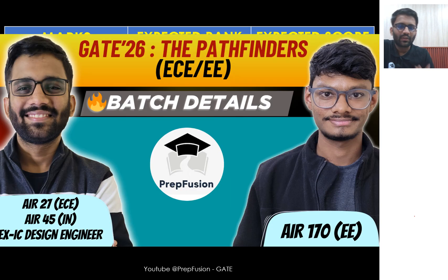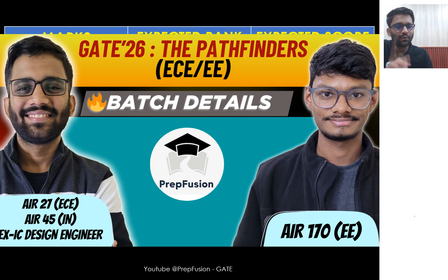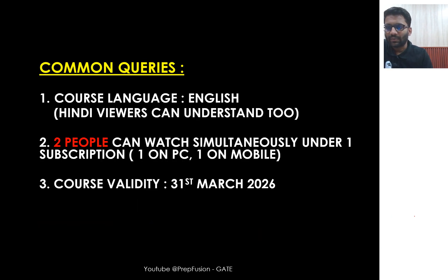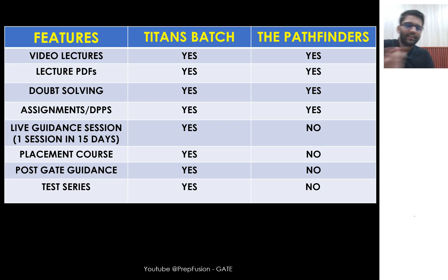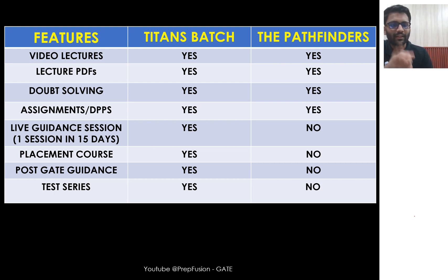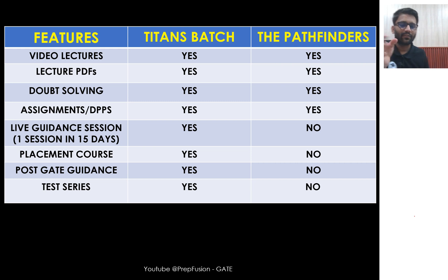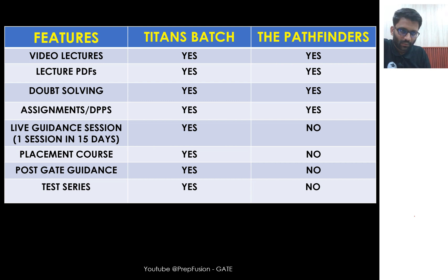Let's talk about our other courses. We have the Pathfinders full course — the promo code is PATH25, and you can avail this full course for ₹7,500. We also have the Titans badge. For the Titans badge, the promo code is TITANS10 (T-I-T-A-N-S 10). For Pathfinders the promo code is PATH25. These promo codes are applicable for today only — today is the last date for availing the discount on both Pathfinders and Titans badge.